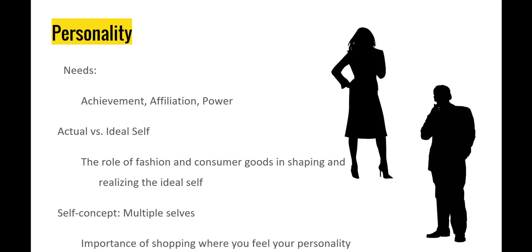Another way personalities vary is their actual versus ideal self. We all have an ideal self — in the age of social media, that's often the person we present on Facebook or Instagram, maybe our personal best on a great day, sometimes with the help of a couple of filters. Consumer goods play a role in shaping and realizing the ideal self. You might buy a specific line of cosmetics to look more polished, fitness equipment to become stronger, or a green vehicle to meet your ideal of someone who helps the environment.